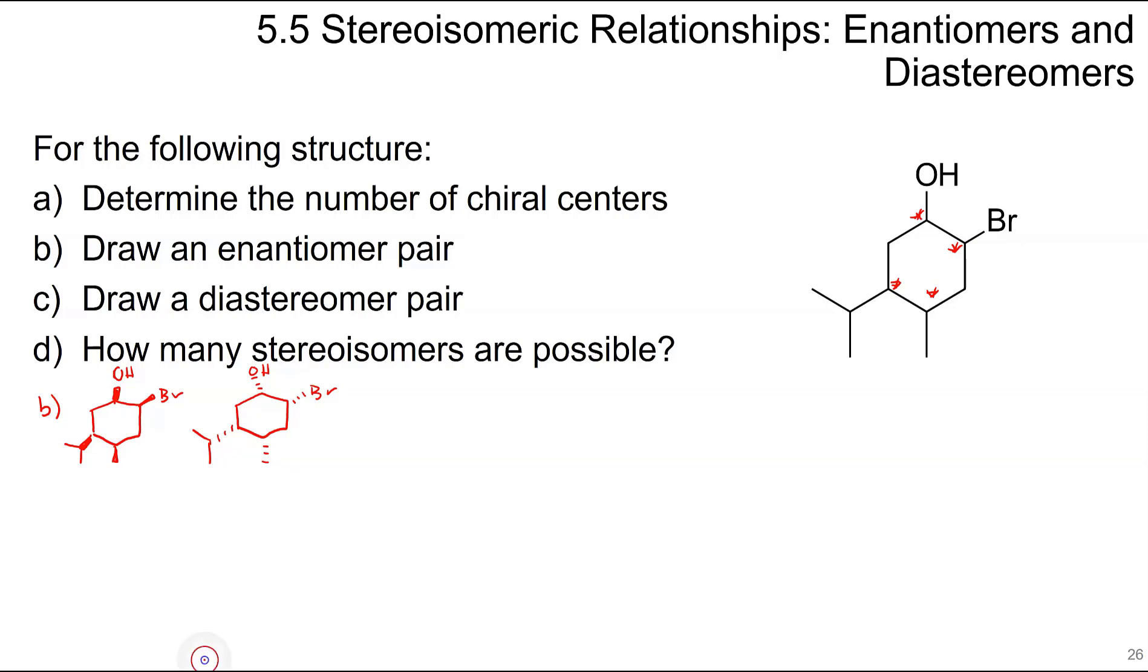For C, draw a diastereomer pair. You just have to change the stereochemistry of one of those sites. If I make this OH dashed, I can keep everything else the same. That would be a diastereomer pair. Or this would be another diastereomer pair. So how many stereoisomers are possible? It would be 2 to the 4, which equals 16.